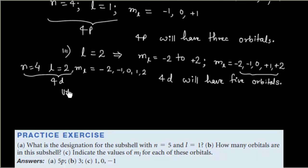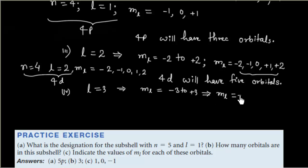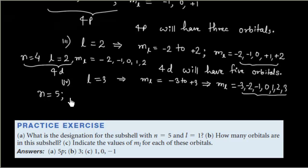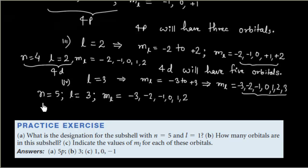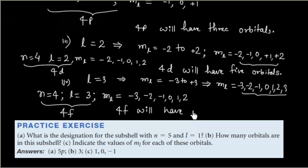For l equal to 3, ML ranges from minus 3 to plus 3. So ML equal to minus 3, minus 2, minus 1, 0, 1, 2, and 3 — seven possible values. So the 4f subcell has 7 orbitals.